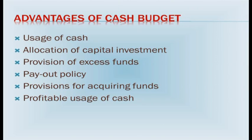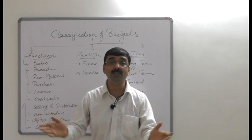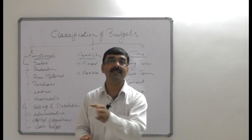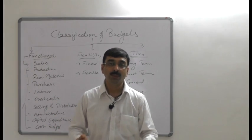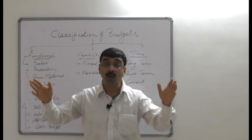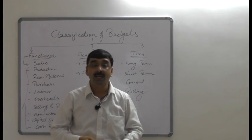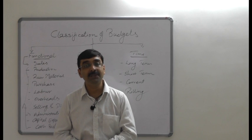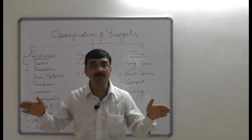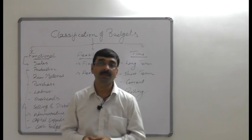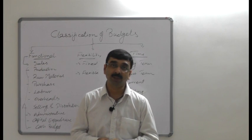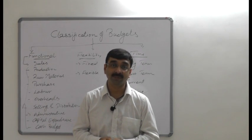The first advantage of cash budget is usage of cash. Management can plan the use of cash in accordance with the changes in receipts and payments. They need to identify how much receipt is possible and how much payment is to be made during the year. On the basis of this balance, they can plan the requirement and usage of cash.